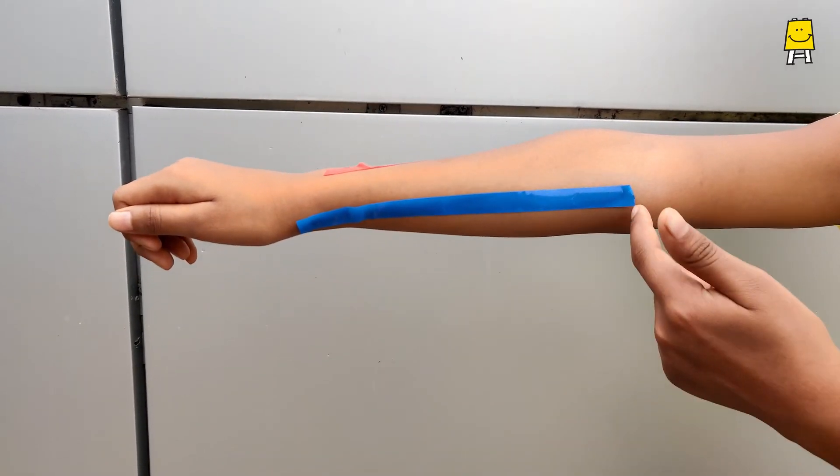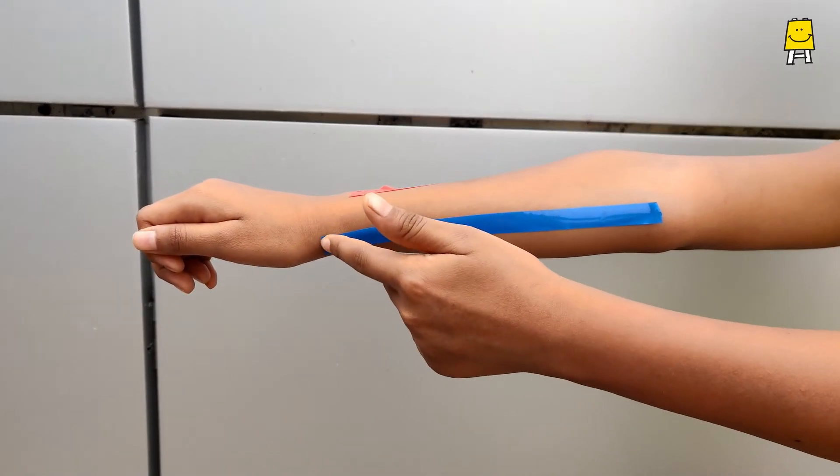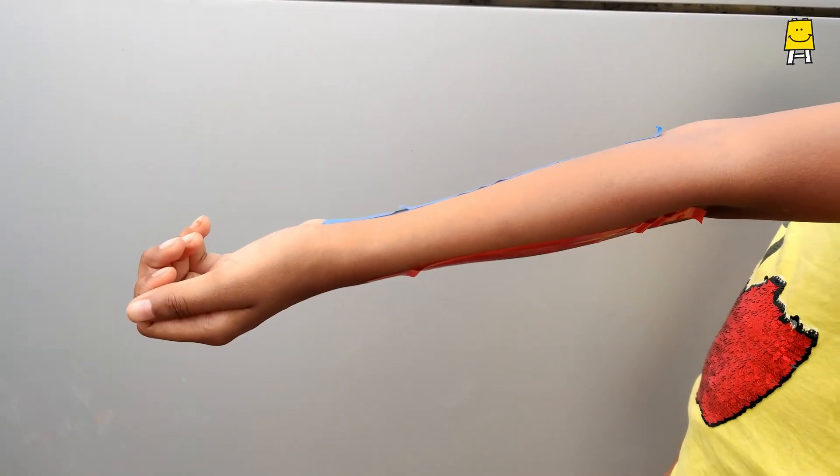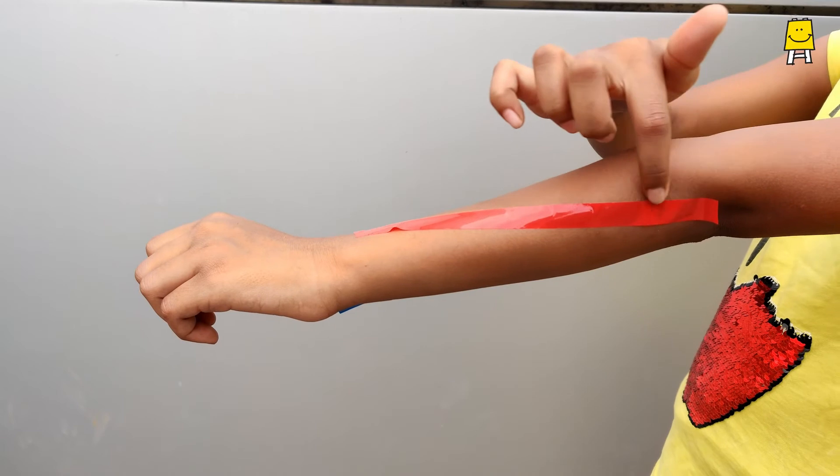The tape on the lower side appears the same on turning the wrist. But the tape on the upper side twists completely. How is this possible?